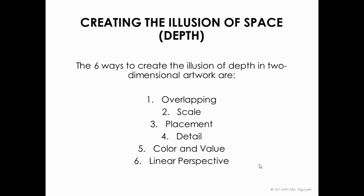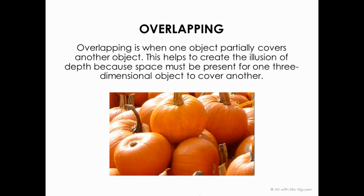Now, to create the illusion of space in your artwork, there are some tricks that artists use — and these are really powerful. When you use them, it's almost magical: you can turn a two-dimensional surface into what appears to be a three-dimensional surface. The techniques are: Overlapping, Scale, Placement, Detail, Color and Value, and Linear Perspective. You'll be trying some of these in your elements of art activities as a first introduction to how they work.